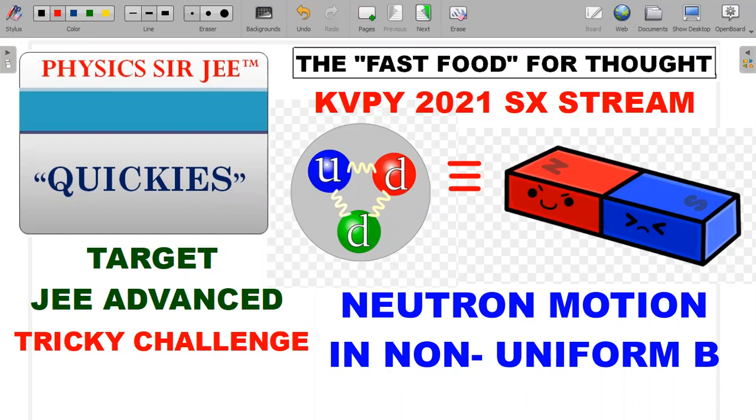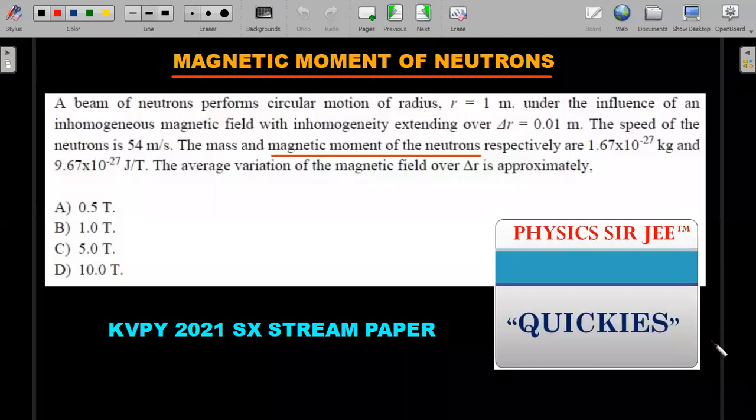I picked a question from KVPY 2021 SX stream examination, which was a very tricky challenge of a neutron moving in uniform circular motion in a non-uniform field. It's a concept very ripe for JEE advanced kind of a situation. If you have not tried this problem, please do pause the video here, try it out for one or two minutes and do come back for the complete explanation of why neutrons are supposed to have magnetic moment and what is their effect.